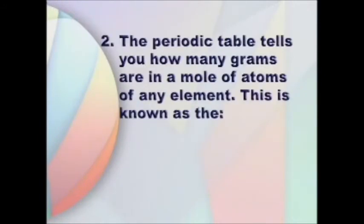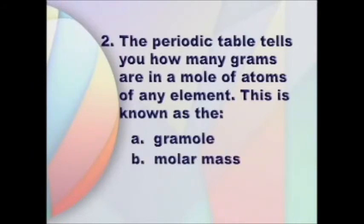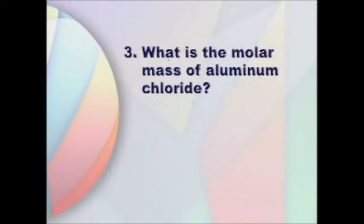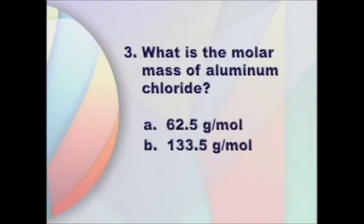Number two: the periodic table tells you how many grams are in a mole of atoms of any element. This is known as the — A, gram mole. B, molar mass. C, atomic mass unit. Number three, you will need a periodic table and a calculator: what is the molar mass of aluminum chloride? A, 62.5 grams per mole. B, 133.5 grams per mole. C, 116.5 grams per mole.